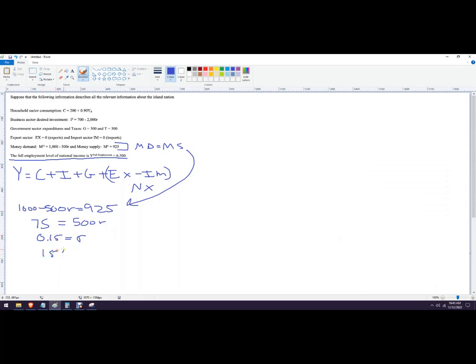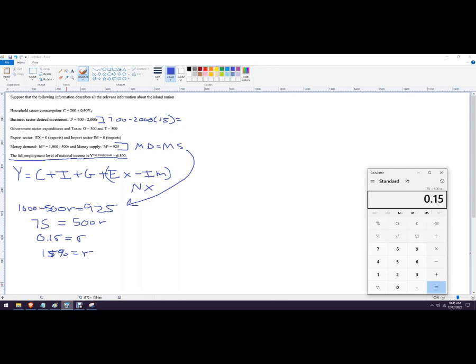Or in real world terms, this would be 15 percent, a fairly high interest rate facing this economy. We're going to plug it into this formula because we want to solve for I. That would be 700 minus 2,000 times 0.15, which equals 300. 700 minus 300 is 400. So investment in this economy is 400.